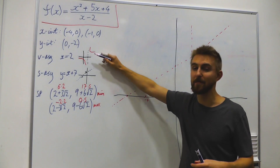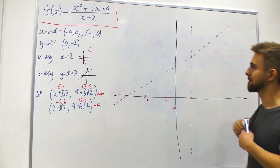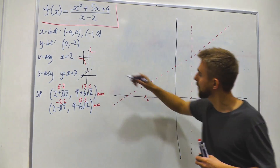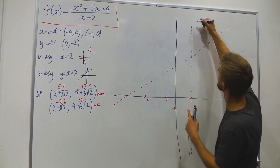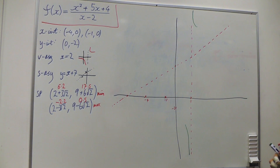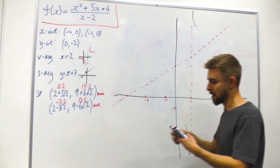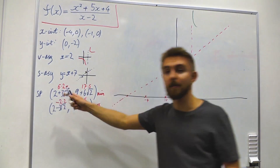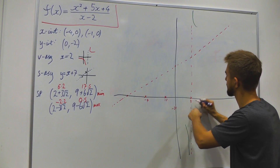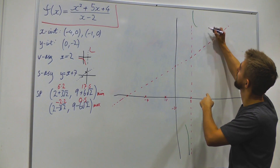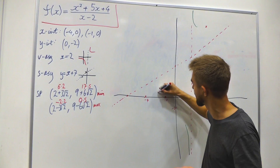Using our green pen: to the left of x = 2 the curve comes up from below, and to the right it comes down from above, tending toward the slant asymptote. The curve must pass through all the marked intercept points. Finally we mark the stationary points: (6.2, 17.5) as a minimum and (−2.2, 0.5) as a maximum.